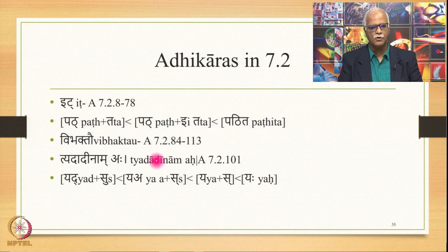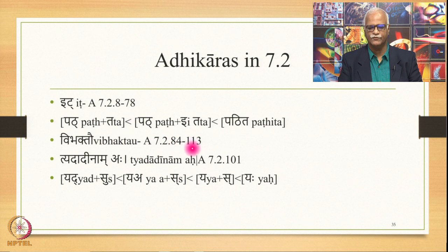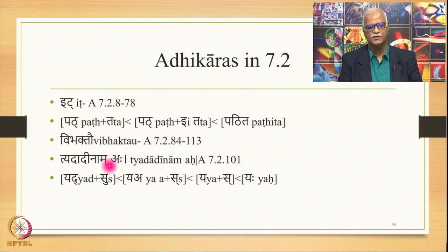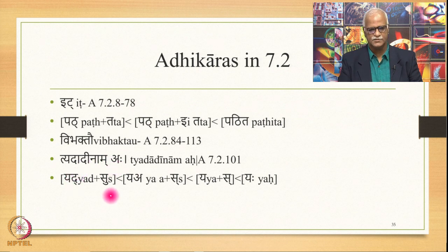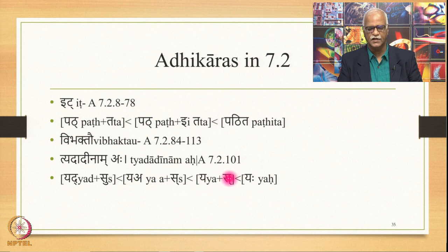The next important Adhikara is Vibhaktav, meaning 'immediately before a Vibhakti', from 7.2.84 up to 7.2.113. The example is Tadaginamaha: when a Vibhakti suffix follows, substitute Tyad etc. by A. So Yad — a Tyadadi — Yad plus Su (a Vibhakti): Da gets substituted by A, giving Ya plus A plus Sa, and we get Yah.